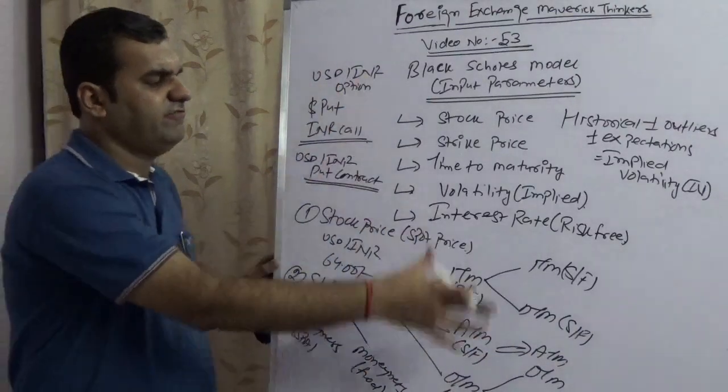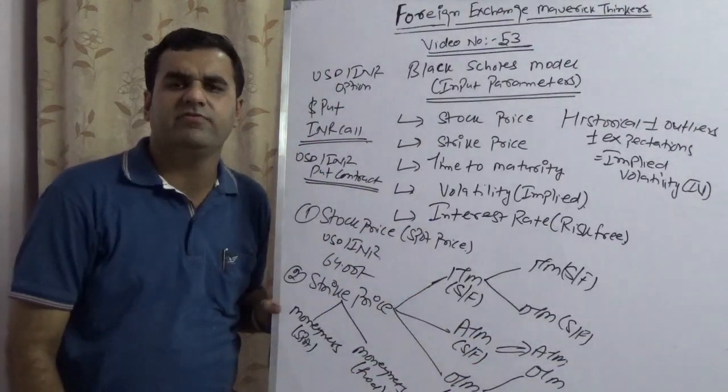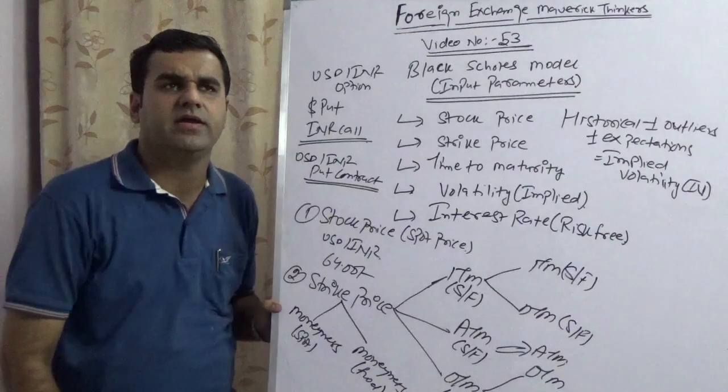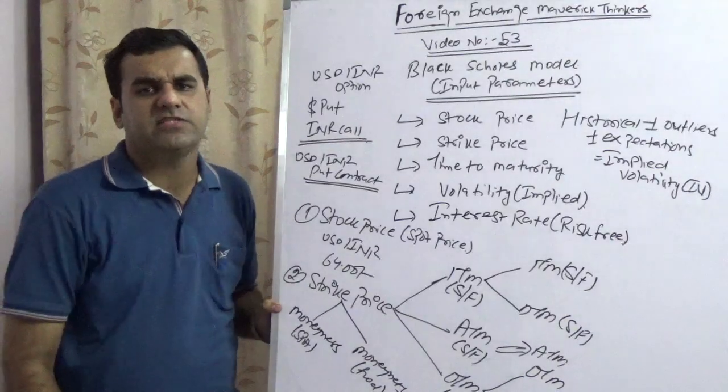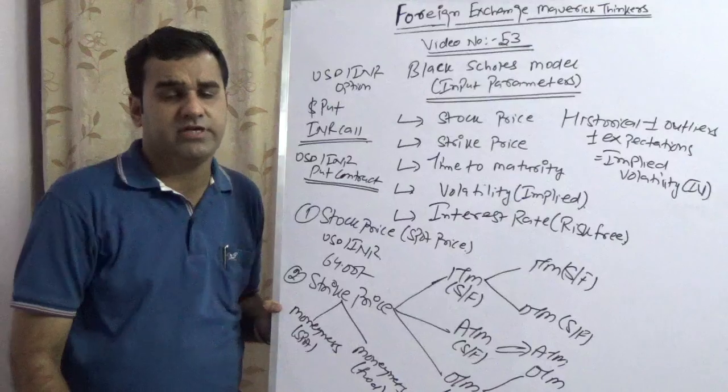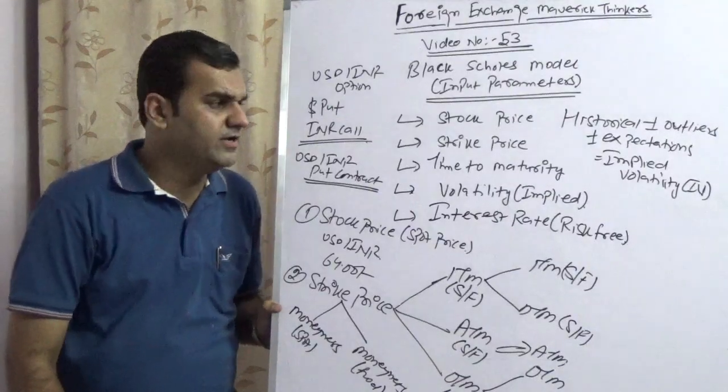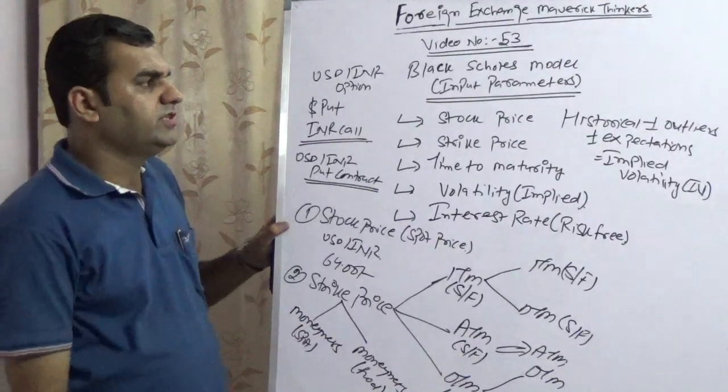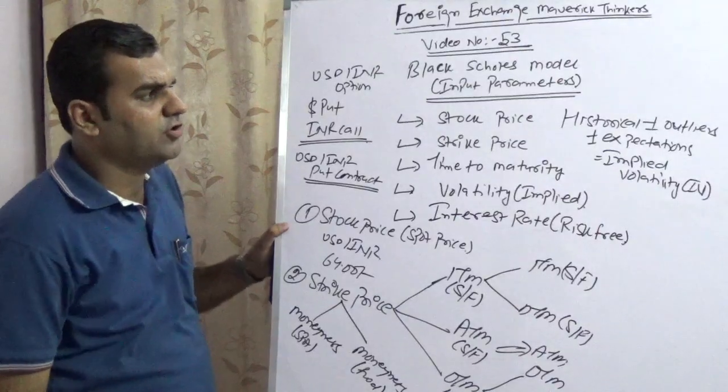So these are the five key parameters. In the next video, we will discuss what do you mean by put-call parity, what are the various formulas of Black-Scholes model, theoretically speaking, how people are calculating it. But as of now, these are the few important standard parameters of Black-Scholes.